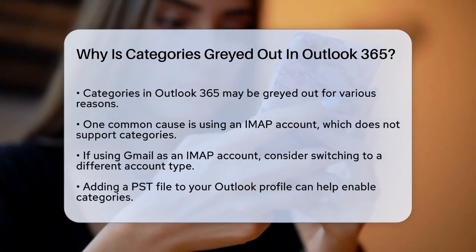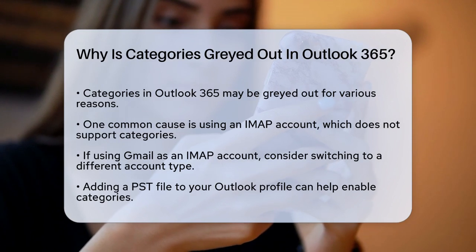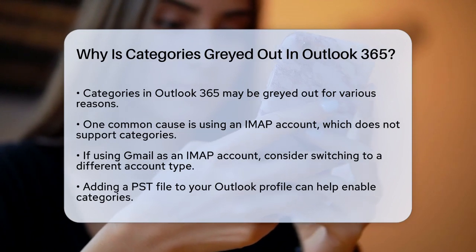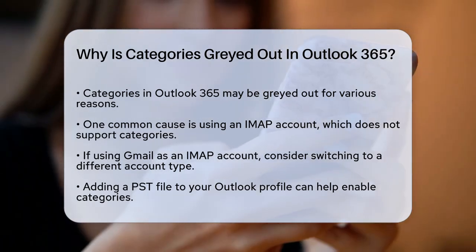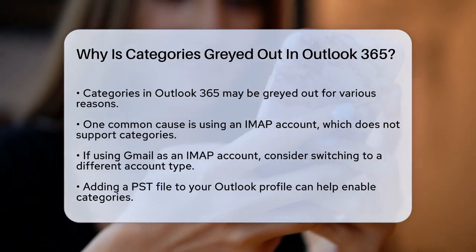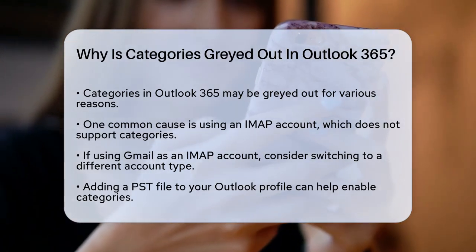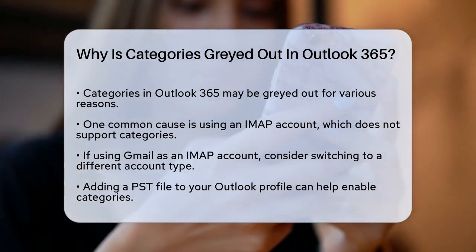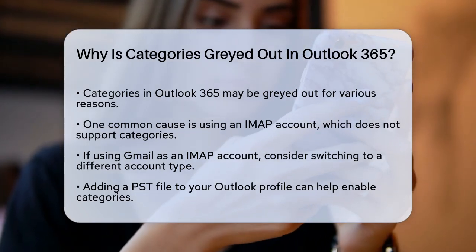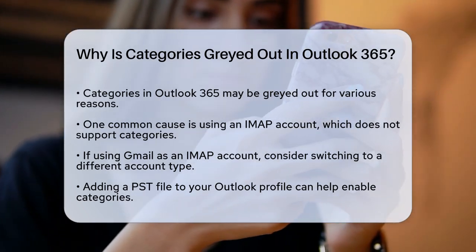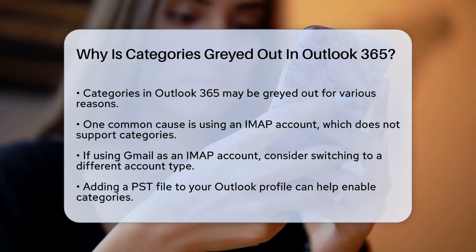Let's figure out what might be causing this issue. First, one common reason is the type of email account you're using. If your Outlook profile is set up only with an IMAP account, categories won't work — IMAP accounts don't support categories, so you'll need to switch to a different account type. For example, if you're using Gmail, setting it up as an IMAP account will cause this problem.